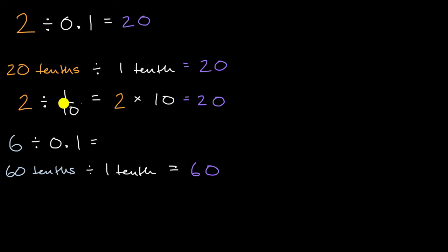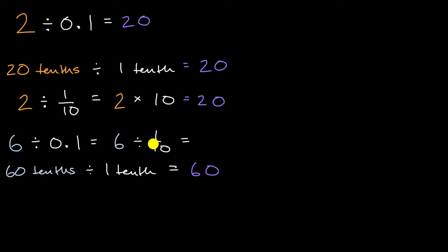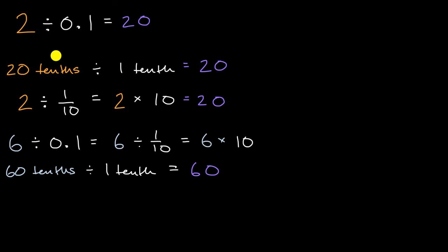You might see a pattern — when we divide by a tenth, we end up multiplying by 10. You could also say six divided by one tenth is the same thing as six divided by one tenth written as a fraction, which equals six times 10, or six times 10 over one — either way, that's equal to 60.